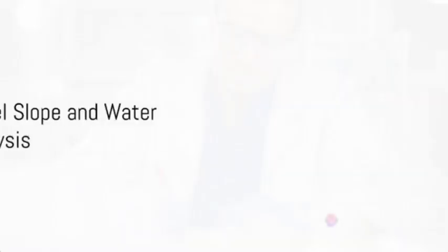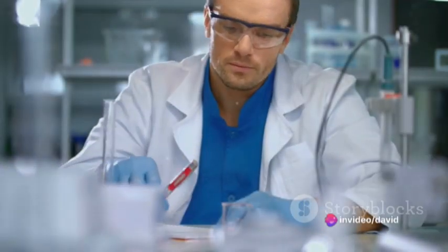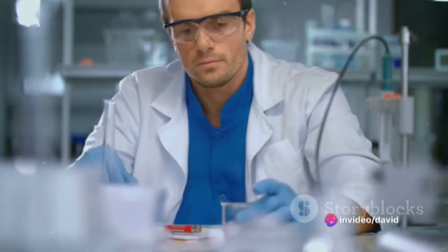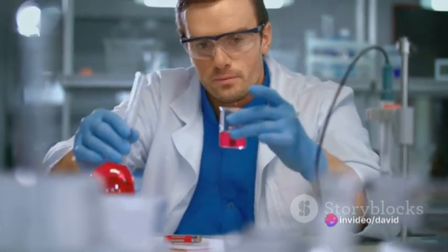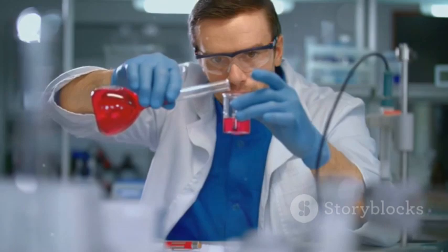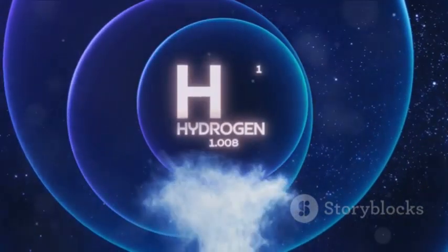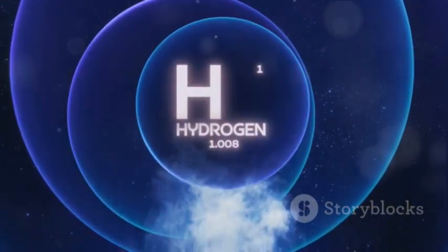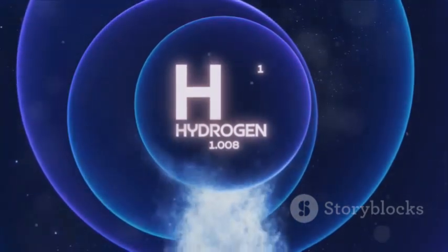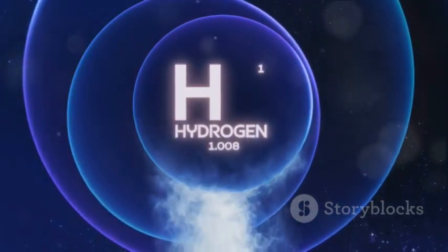The Tafel slope is a vital tool for scientists to predict the efficiency of electrochemical reactions, while water electrolysis offers a promising avenue for the production of hydrogen fuel. Together, they represent the fascinating interplay of electricity and chemistry and their potential applications in the realm of renewable energy.